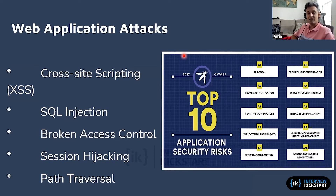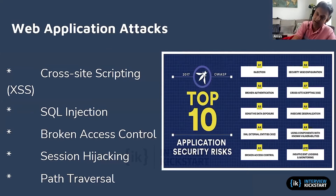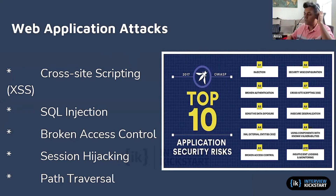Broken access control, session hijacking, path traversal — there's an organization called OWASP. OWASP has a list of attacks that normally happen against web applications and calls them the OWASP Top 10. As you can see here, the first attack is injection, which is the most common attack against web applications.